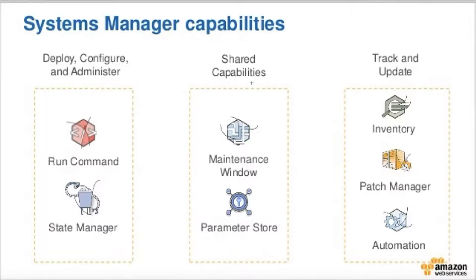The System Manager capabilities include: deploy, configure and administer, shared capabilities, and track and update. For deploy, you can execute a particular shell script or command across 200 EC2 instances. For State Manager, you can set the current state and the target state — for example, moving from version 1 to version 2. In the state manager, you can install software or an OS and apply patches.